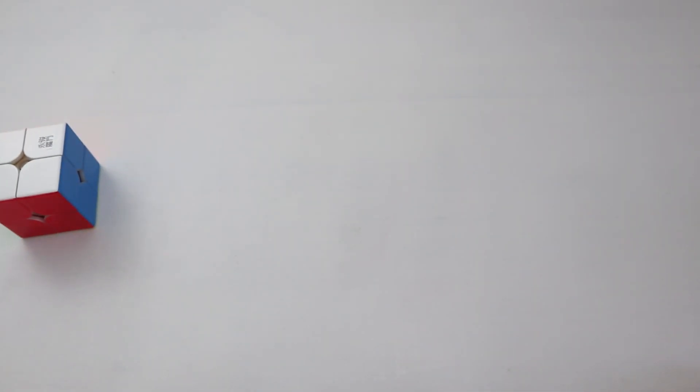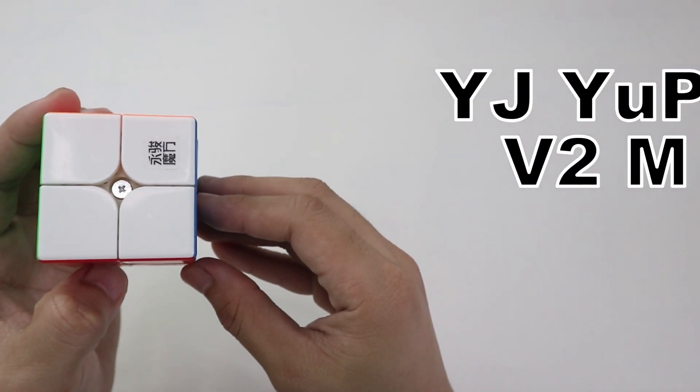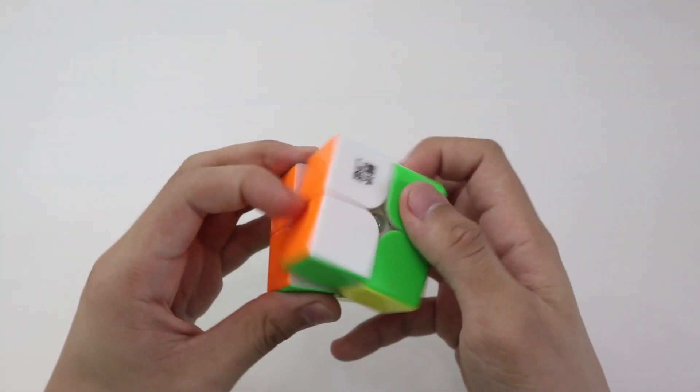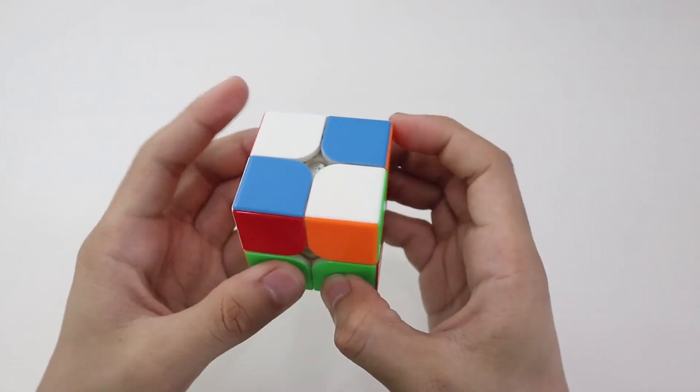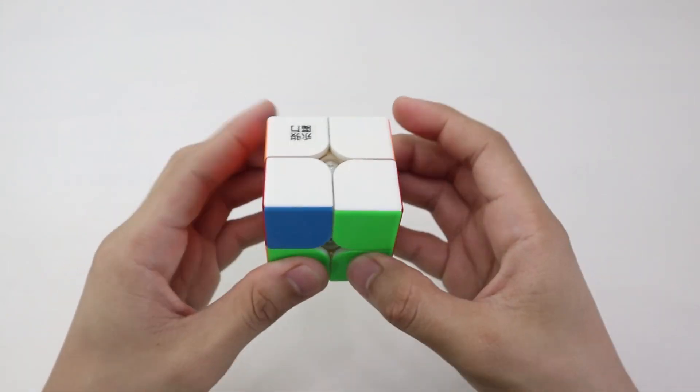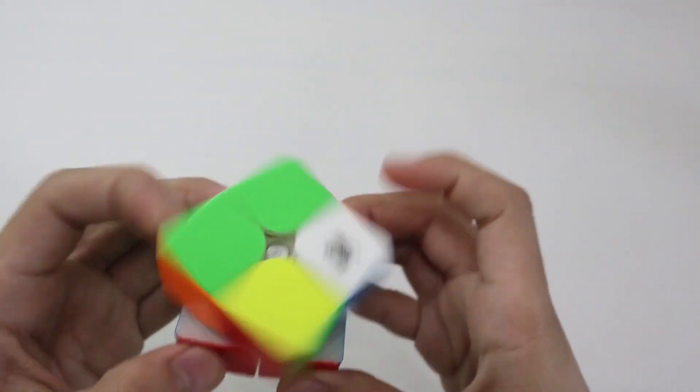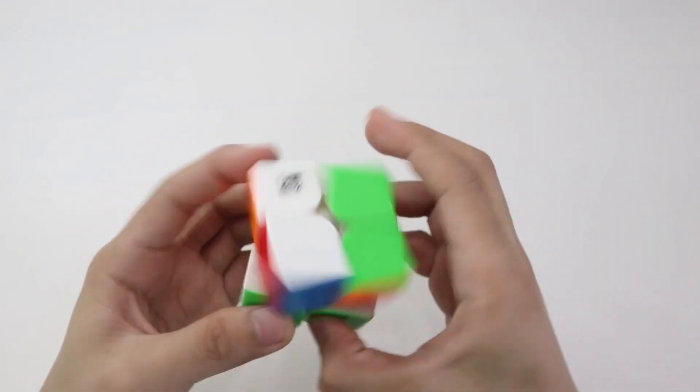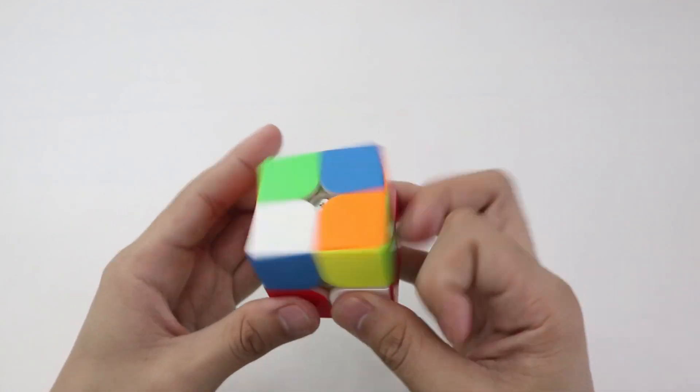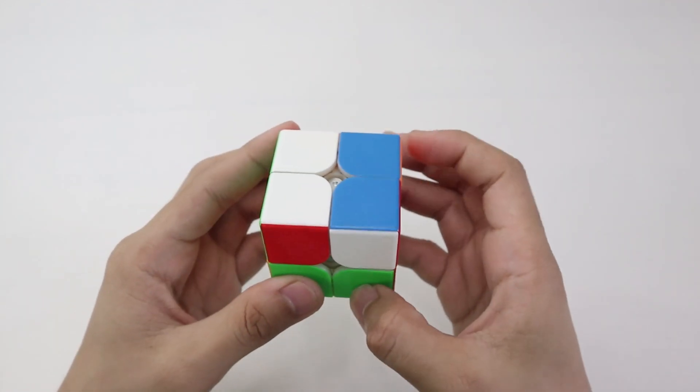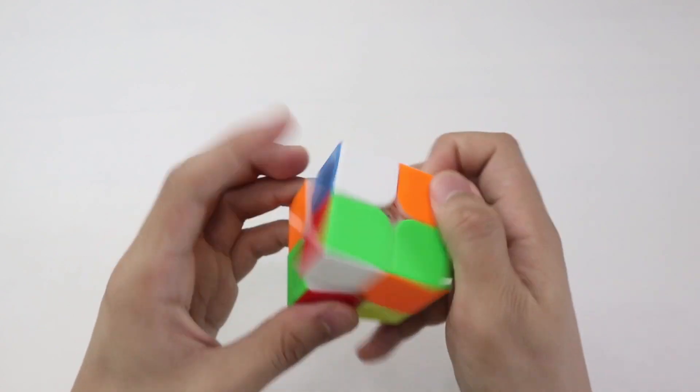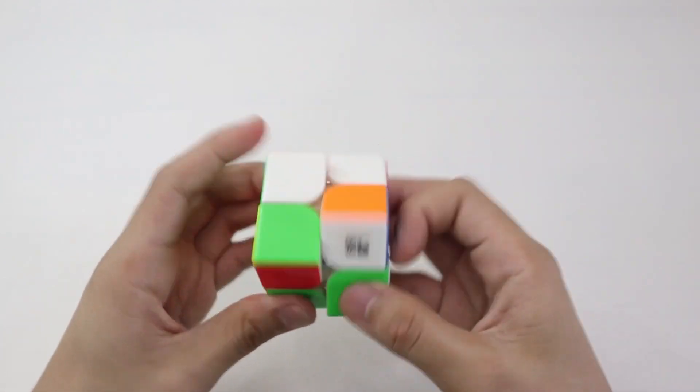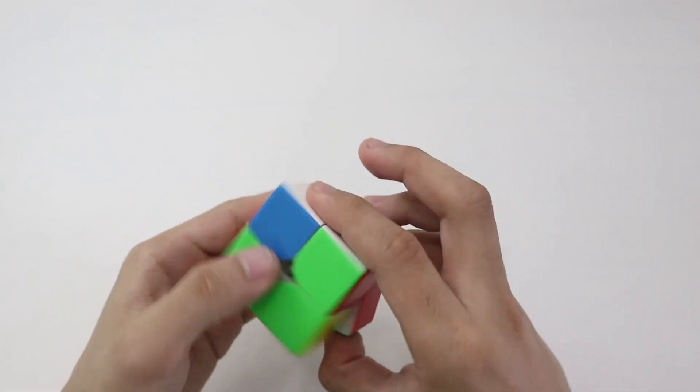Lastly, but certainly not the least, is this puzzle from YJ. The YuPo V2 M. Well, first comment, I just wonder how the version one feels like. Anyway, the feeling of this puzzle is very crunchy and clacky. Perhaps the clackiest 2x2 puzzle among the bunch. It feels like I'm using a different version of YJ MGC 2x2 which is currently my main. And the magnetic strength is on par with the QiYi MS 2x2. But I wonder if there's also a dual magnetic system just like the QiYi MS 2x2.